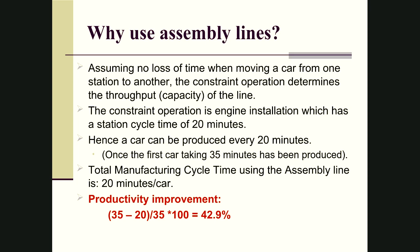If they are all working in parallel, the total manufacturing cycle time is no longer 20 plus 5 plus 10. We have a line with three operations: the first takes 20 minutes, the second takes 5, the third takes 10. The cycle time of this line is determined by the constraint operation — the one that takes the longest. So just by doing this, we've reduced our total manufacturing cycle time from 35 to 20 minutes, giving us a productivity improvement of about 43 percent.